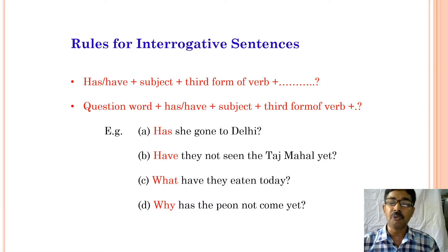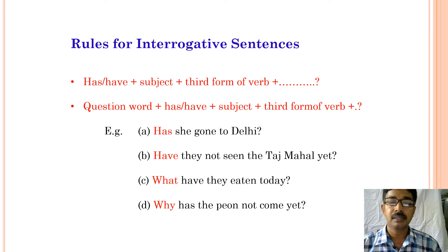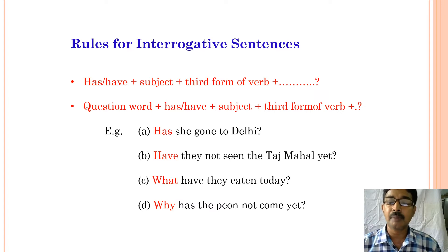Now let us see a few examples for interrogative sentences. Has she gone to Delhi? Have they not seen the Taj Mahal yet? What have they eaten today? Why has the poet not come?